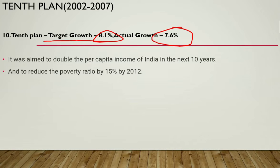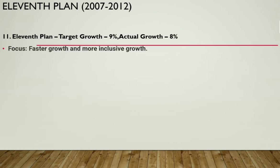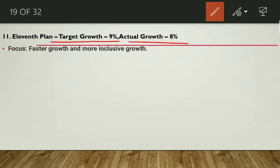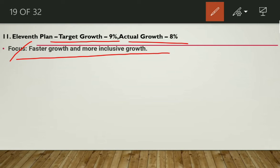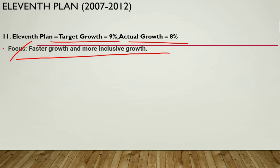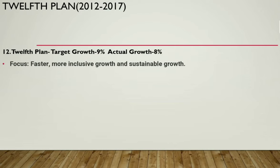The Eleventh Five Year Plan ran from 2007 to 2012 with a target growth of 9% and an actual growth of 8%. The focus was 'faster and more inclusive growth.' Key targets included connecting every village by telephone, increasing forest and tree cover, increasing energy efficiency, providing clean drinking water by 2009, reducing the total fertility rate to 2.1, and accelerating GDP growth from 8% to 10%.